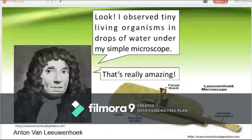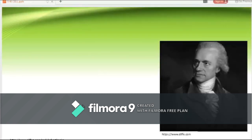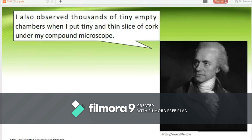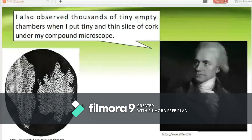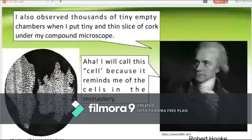The next pioneer observed thousands of empty chambers when he put a tiny, thin slice of cork under the compound microscope. These are the cork cells he saw, and upon seeing them he was reminded of the cells in a monastery. He termed it 'cellulae,' and it was later termed 'the cell.' He is none other than Robert Hooke.